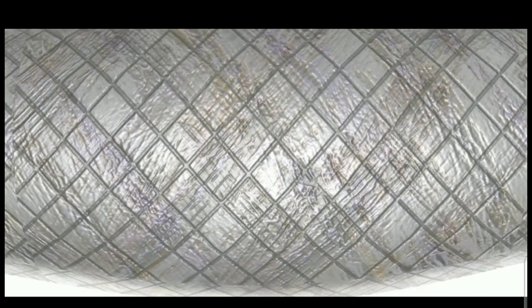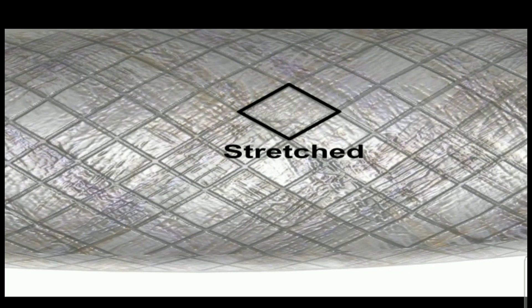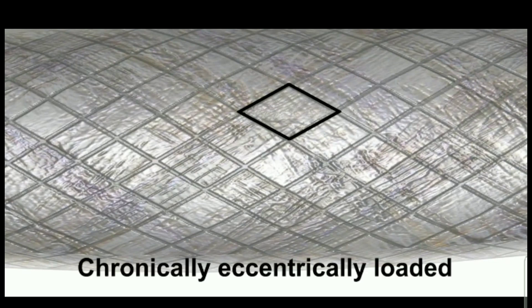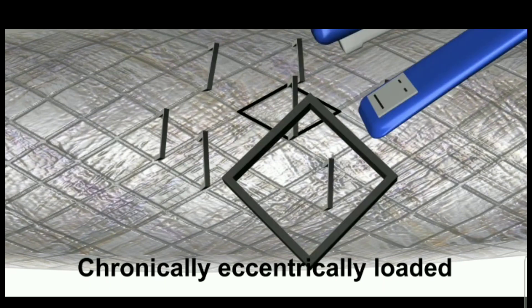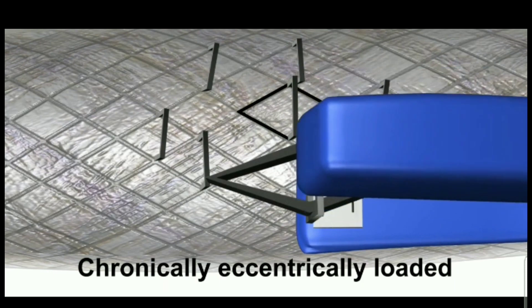When a muscle is chronically shortened or chronically lengthened, the texture changes. Chronically lengthened muscles create bonds or adhesions over time. We call this condition locked long.